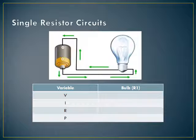You'll start by putting in the values that are set by the components. First I'll look at my battery and see what voltage it has — in this case, I have a 12-volt battery, so I'm going to put in 12 as the voltage for the bulb, because the only place the electron has to use that energy is in the light bulb. The second thing you should know from the beginning is the resistance of the bulb. You can measure this using a multimeter — let's say we measured the bulb and it said 2 ohms.